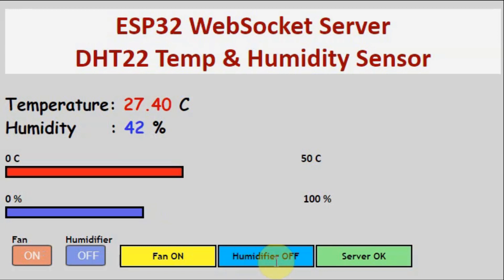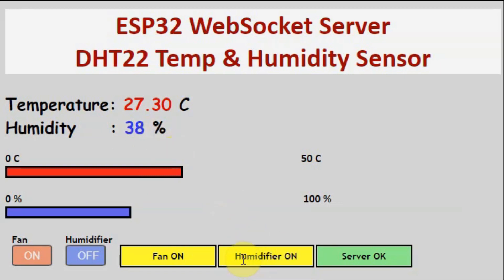We also have a message for the humidifier, which says "humidifier off", but when the humidity level goes below 40%, we get the message "humidifier on", and we click on the humidifier button to turn on the humidifier connected to the server.